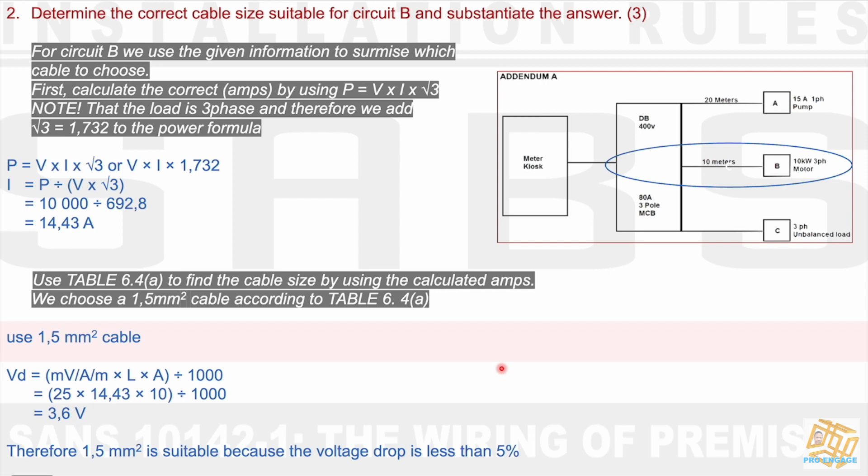We then use table 64A to find the cable size by using the calculated amps. Again, we've done this before. We choose a 1.5 mm² cable according to the table 64A. We use 1.5 mm² cable, and we say if we use that, we then go to the table, find the 25 value according to this and the table and its column, and we times that by the amps and distance, and we divide it all by 1,000 to convert that answer to volts. 3.6 volts is the answer. Therefore, 1.5 mm² cable is suitable because the voltage drop is less than 5%.